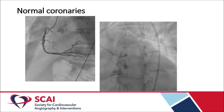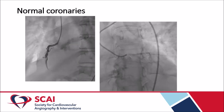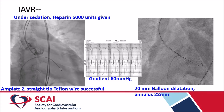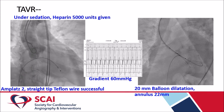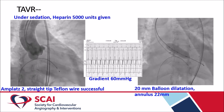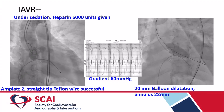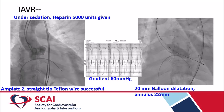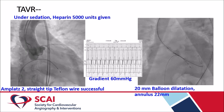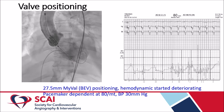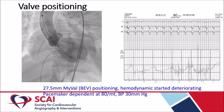Prior to TAVI, normal angiography of both right and left coronary arteries was performed. Under sedation with heparin 5000 units, the valve was crossed and gradient was 60 mmHg. The annulus was dilated with a 12 mm balloon for an annulus of 22 mm. At this point, the patient had no deterioration.